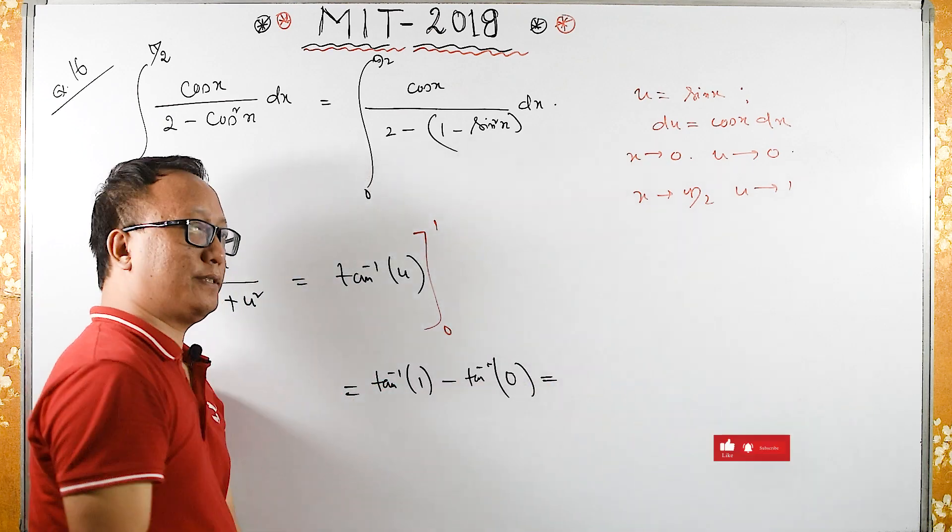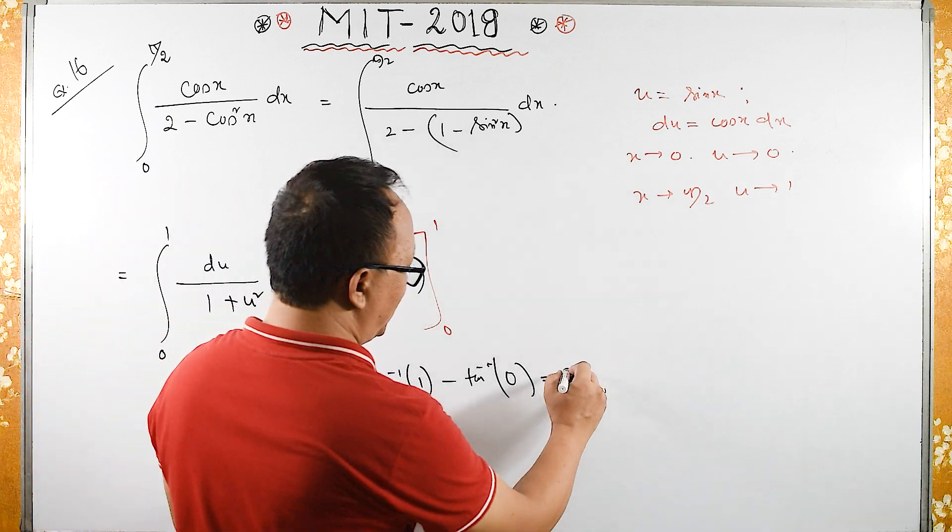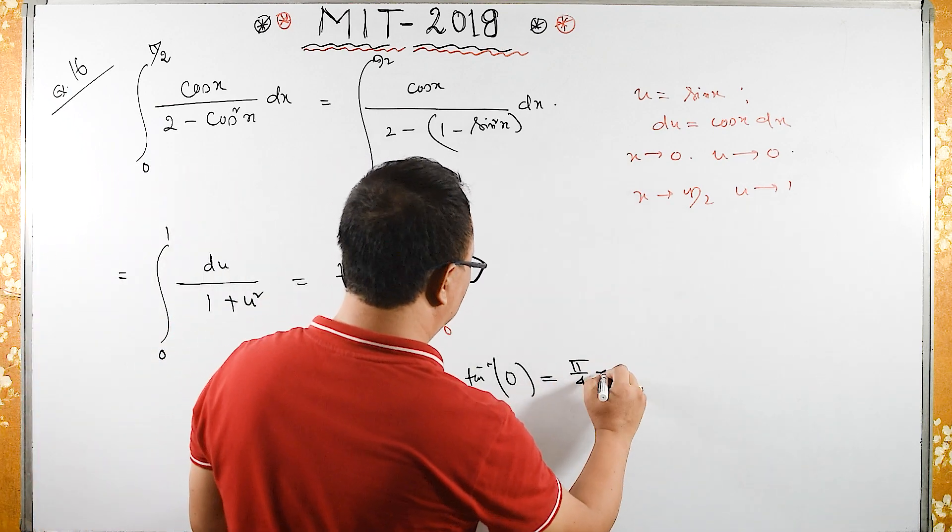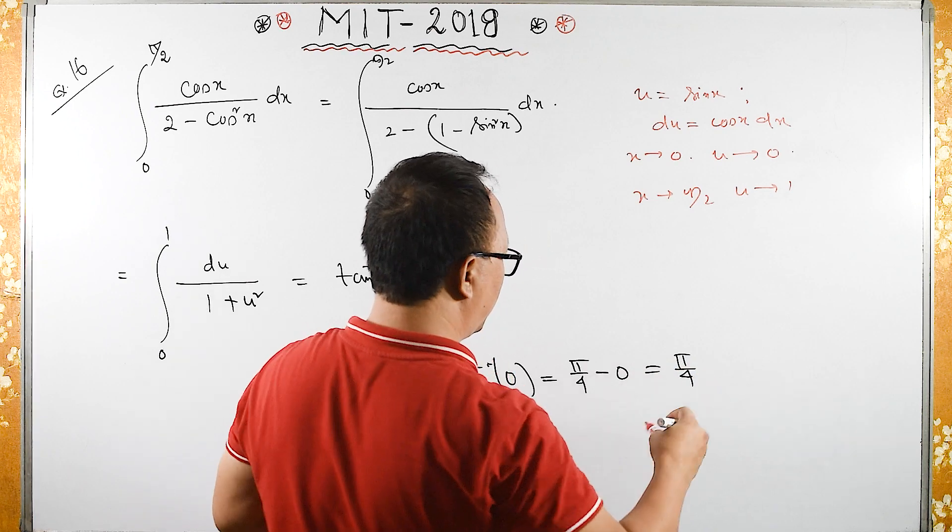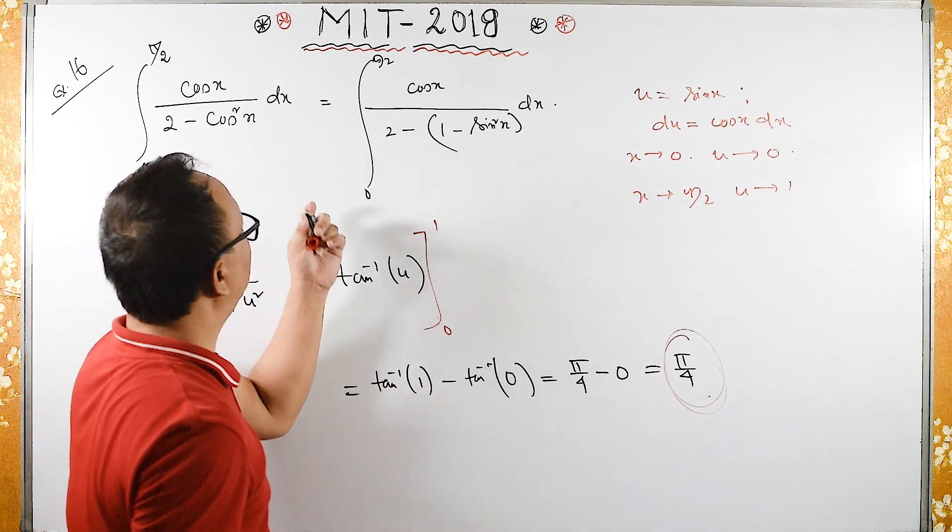Tan inverse 1 is 45 degrees, which means pi by 4. Tan inverse 0 is 0, therefore it is pi by 4. This is the answer for this.